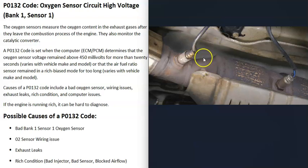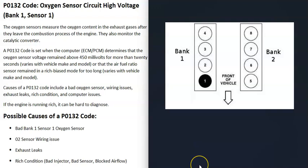If you have a V6 or V8 engine, you're going to have two banks. Bank one is always the side with the number one cylinder, and the opposite is bank two. You can Google the number one cylinder location for your specific engine since there will be differences. If you have a four-cylinder engine it wouldn't matter, because you only have one bank.